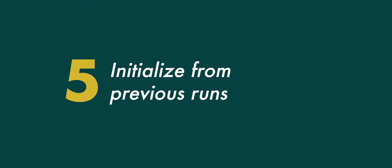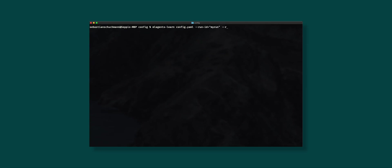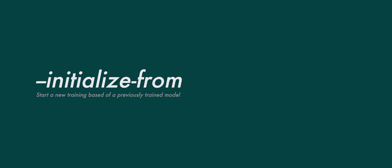Number 5: Initialize from previous runs. You may know the resume command to continue training an agent, but if you want to start a new training run based on a previously trained model, just use --initialize-from equals and then the run ID you are referring to. This comes in handy if your game changed and you need to train a new model but the old model is still better than random — use this command to kick off your new model where the last one left off.